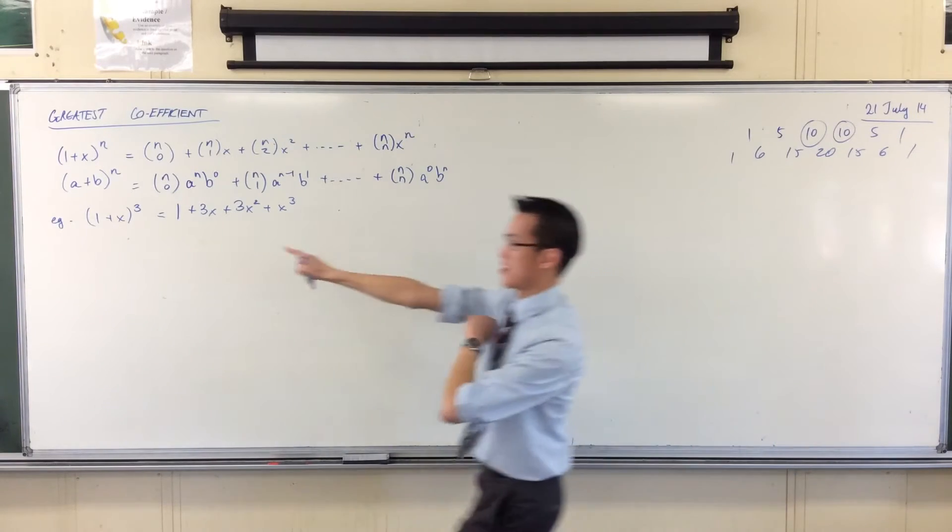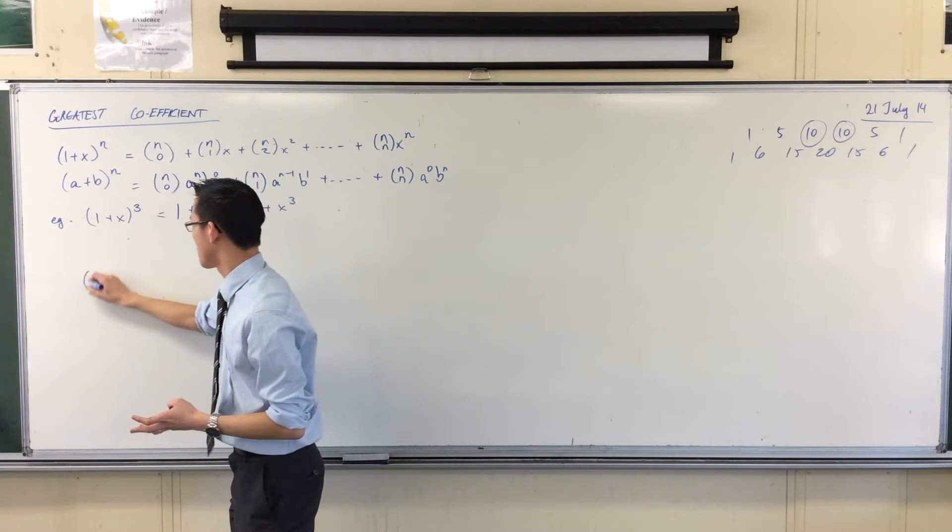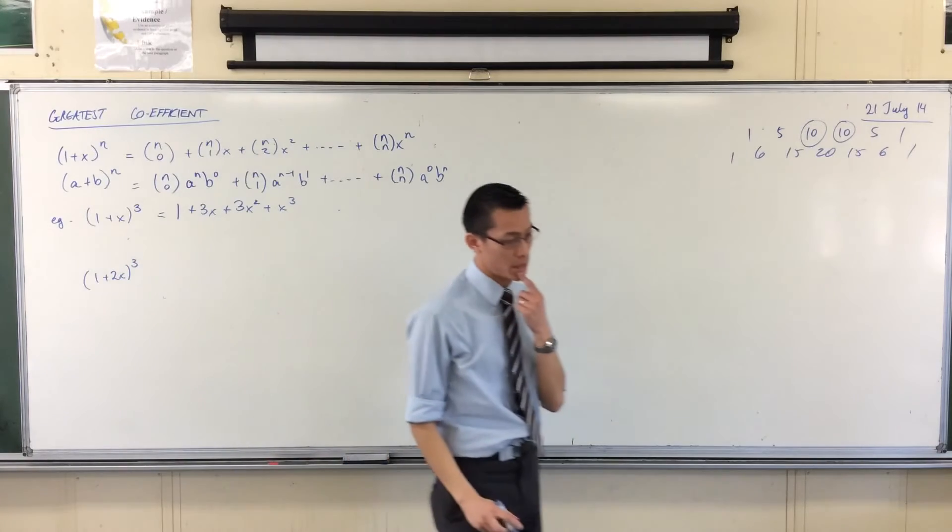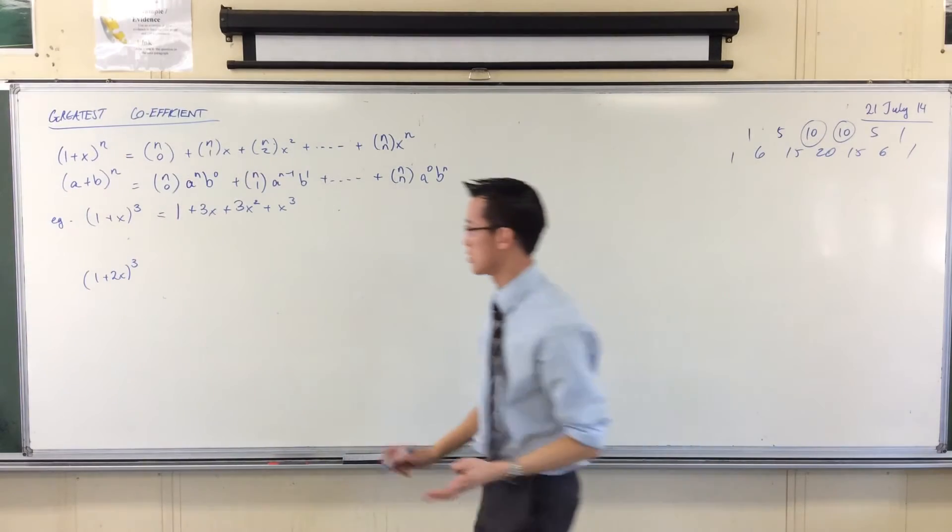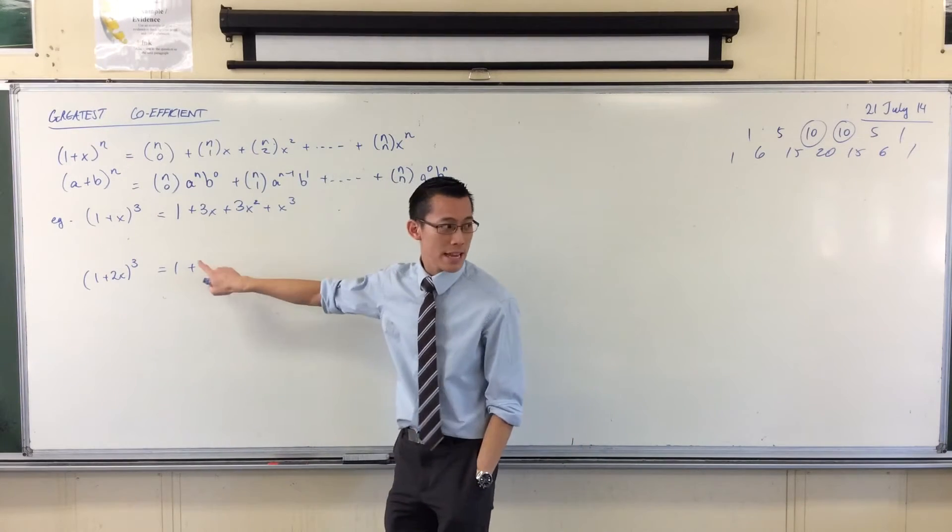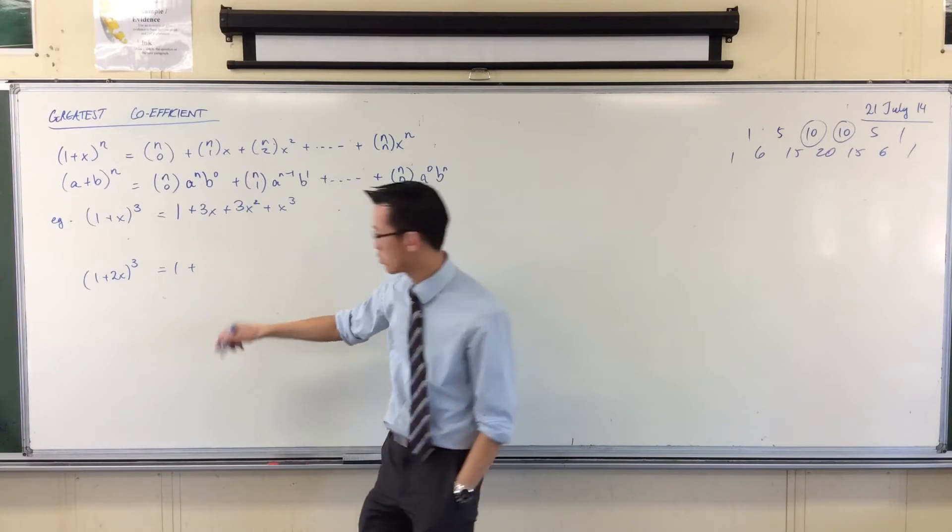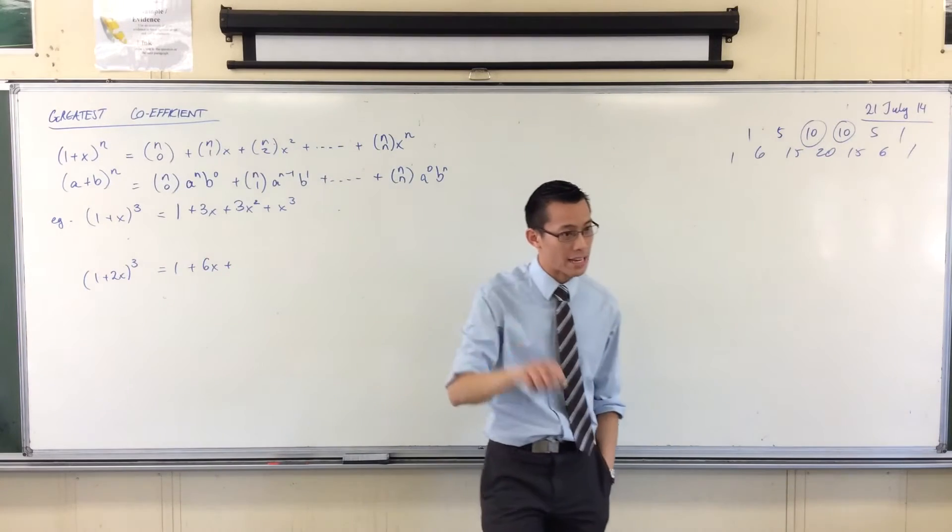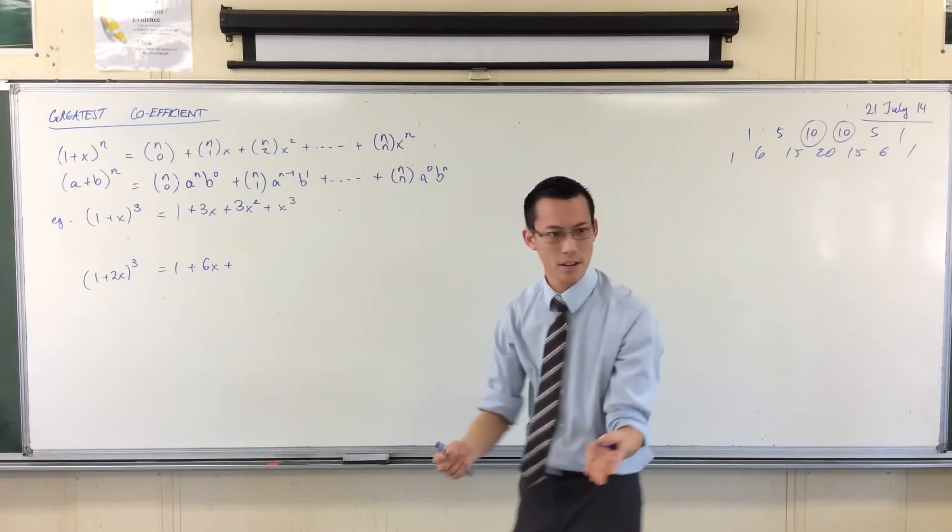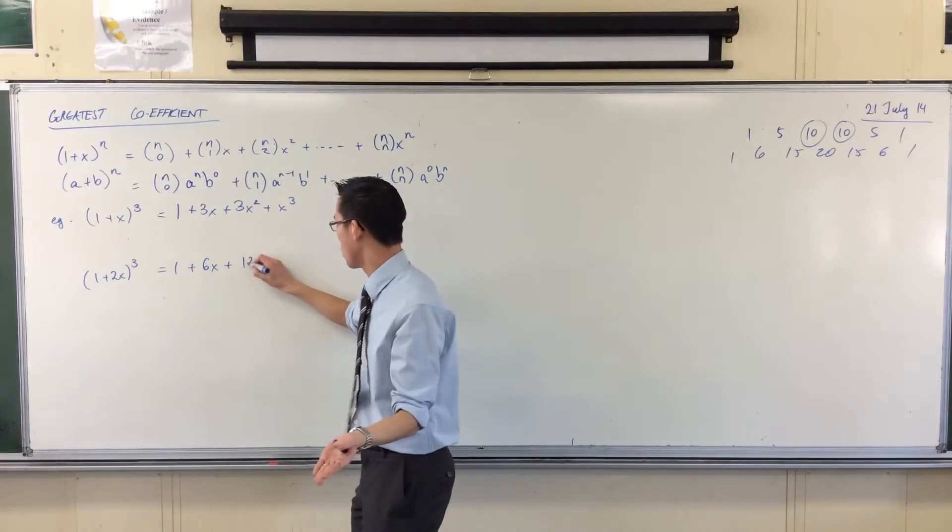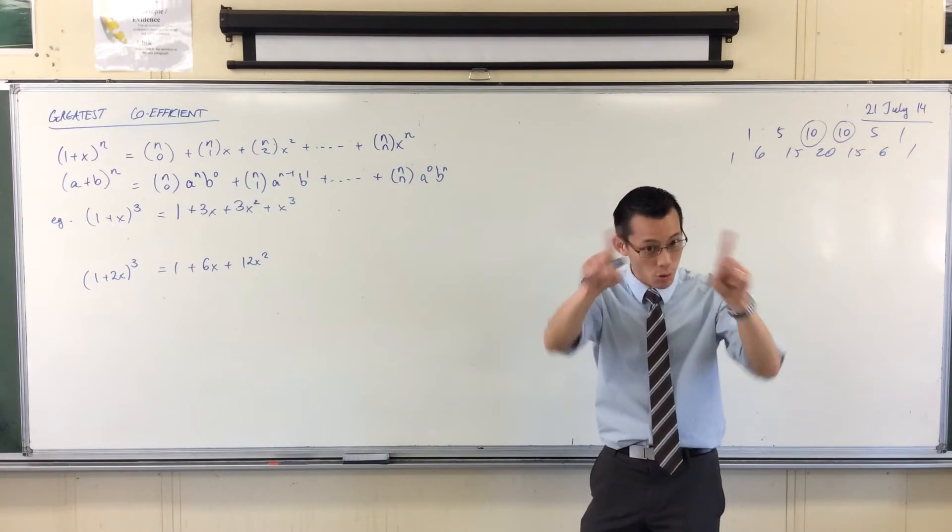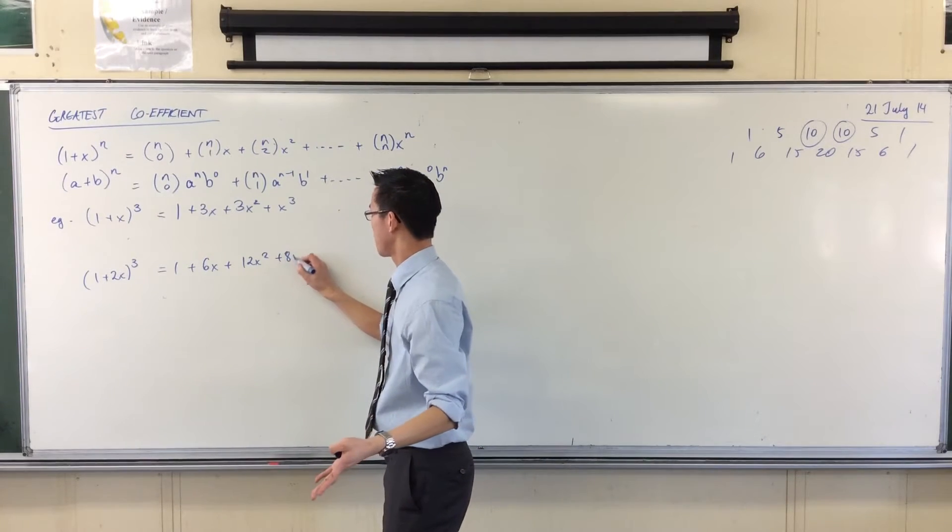Now, if I take the second term here in the binomial and I double it, if I make that 2x, what will happen to the coefficients? Well, the first one will still be 1. But here, I'm going to get 3 lots of 2x. So this will be 6x. Next one over are 3 lots of 2x all squared. So that's 3 lots of 4x squared, that's 12x squared. What will my last term be? It'll be 2x all cubed, which is 8x cubed.